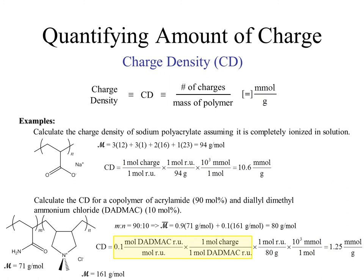To deal with two different repeat units, we use both — we need to consider the average repeat unit. Knowing that the molar ratio is 90 to 10, we calculate the average molar mass of the repeat units by taking 90%, or 0.9, times the molar mass of acrylamide, and then 10%, or 0.1, times 161 grams per mole for DADMAC. Summing these two partial molar masses gives us the average molar mass of the repeat units as 80 grams per mole. The charge density calculation is then the same as before, except we are considering the average mer. Since only the DADMAC repeat unit contributes charge, we start with its molar ratio of 10%, multiplied by one mole of charge per mole of DADMAC, then divide by the average molar mass of 80 grams per mole, and convert to millimoles — giving us 1.25 millimoles of charge per gram of copolymer. This is about one-tenth of the charge density of the sodium polyacrylate homopolymer, because only 10% of this copolymer is charged.